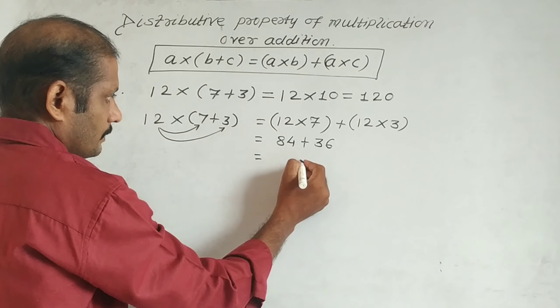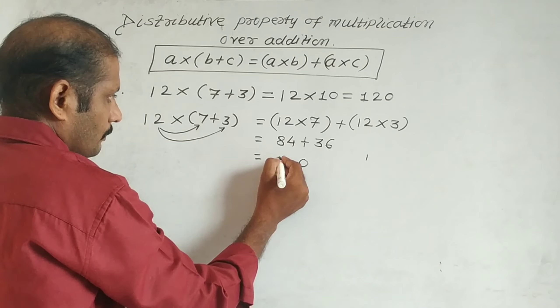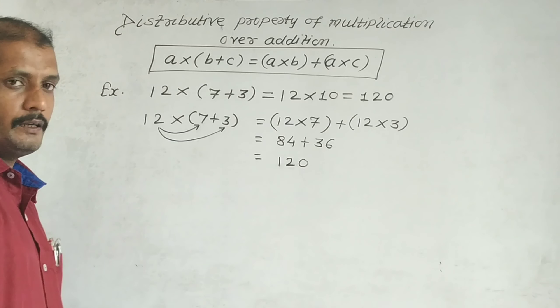Now we'll add both: 6 plus 4 is 10, carry 1, and 8 plus 3 is 11, plus 1 gives 12. The answer is 120.